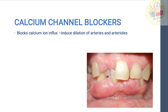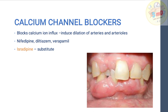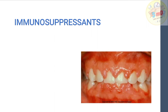Calcium channel blockers like amlodipine and nifedipine are also classical causes of drug-induced gingival enlargement. They block calcium ion influx and induce dilation of arteries and arterioles. Common CCBs involved include nifedipine, diltiazem, and verapamil. The substitute drug for these cases is isradipine. Drug-induced gingival enlargement is first treated by substituting the causative drug. Immunosuppressants — specifically cyclosporin — are the third drug category; cyclosporin reversibly inhibits T-helper cells.